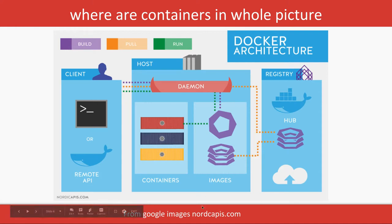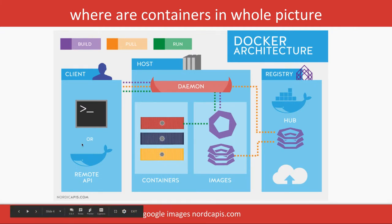This architecture diagram is from nordcappys.com. It explains the same picture we were discussing: there is a client — either the Docker remote API or the Docker command line client — from which we pass different commands like `docker pull`, `docker build`, and `docker run`.